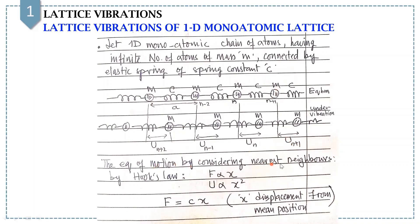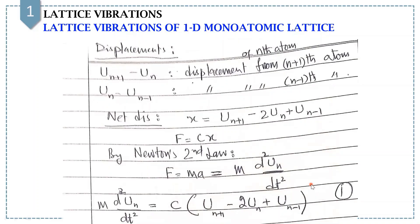By equation of motion, considering the nearest neighbors and applying Hooke's law — according to which F equals CX, where X is displacement from mean position of the atom and C is spring constant — the displacement of the Nth atom from the (N+1)th atom can be written as U_{N+1} minus U_N, and from the (N-1)th atom as U_N minus U_{N-1}. The net displacement for the Nth atom would be X equals U_{N+1} minus 2U_N plus U_{N-1}.